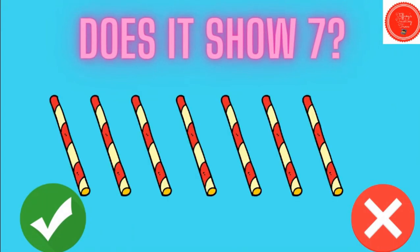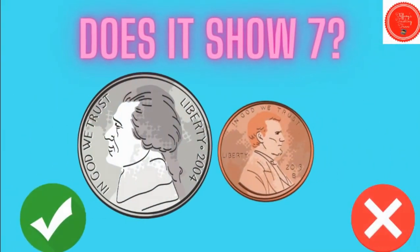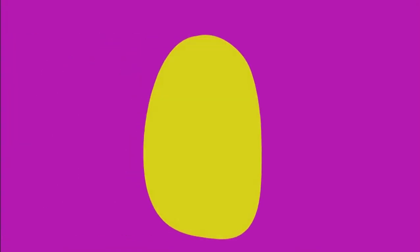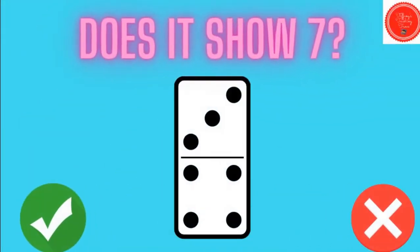How about this? Does it show seven? Yes, it does. There are seven straws. Count this money — does it show seven cents? No, this is only six cents. It does not show seven. Does it show seven? Yes, this is the number word for seven. How about this? Does it show seven? Yes, it does. You have three on the top, four on the bottom. Three plus four gives us seven.